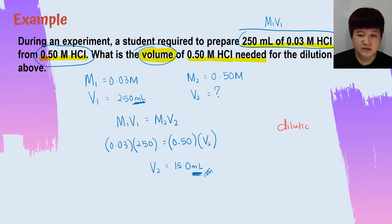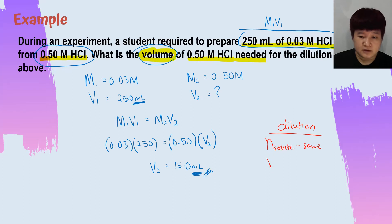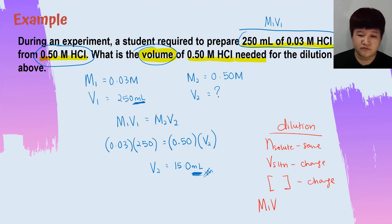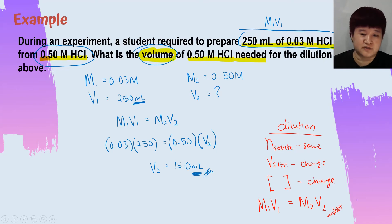So dilution is a concept where the number of moles of solute is the same, but the volume of solution changes, and therefore the concentration of the solution changes. The formula is easy: M1V1 = M2V2. And that's it for today's video — I'll see you again in the next video.